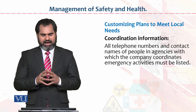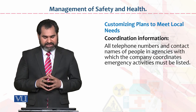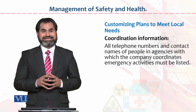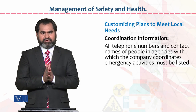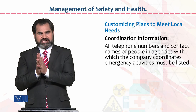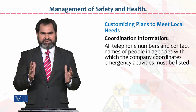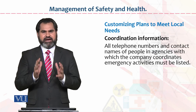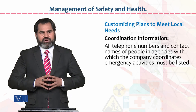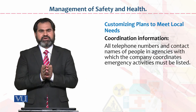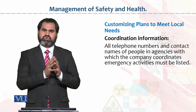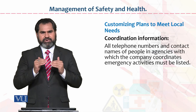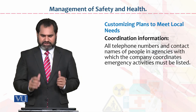Coordination information: all telephone numbers and contact names of people and agencies with which the company coordinates emergency activities must be listed. یہ employees کے table پہ ہونے چاہیے، notice board پہ موجود ہونے چاہیے، اور employees کو زبانی بھی یاد ہونے چاہیے. In case of any emergency، سارے employees coordinate کر سکیں — organization SOP کے مطابق چیزیں define ہوتی ہیں اور department head communicate کرے گا.